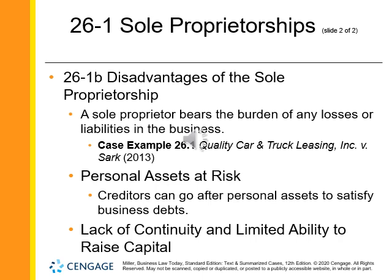The sole proprietor bears the burden of any losses in the business. Personal assets are all at risk, subject to things like state-created homestead exemptions, which we discussed briefly in the context of bankruptcy. Creditors can go after all of those assets, with the exception of things like homestead. There's a lack of continuity if the proprietor dies, as there's no ability for the personal representative or heirs to simply pick up and continue. And there is a limited ability to raise capital because of those risk factors.